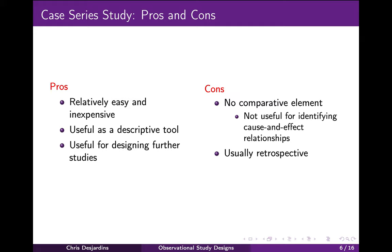The main advantage of case series studies is that they can be comparatively easy and inexpensive. They are useful as a descriptive tool and can also be useful in designing further studies to provide a better quality of evidence. The disadvantages include no comparison group — the sample consists of only exposed participants with the outcome or all persons with the outcome. As a result, it is not possible to determine whether there is an association between exposure and outcome, nor to assess whether there might be a cause-and-effect relationship. Another disadvantage is that this type of design is usually retrospective, which can result in problems due to the use of historical data.